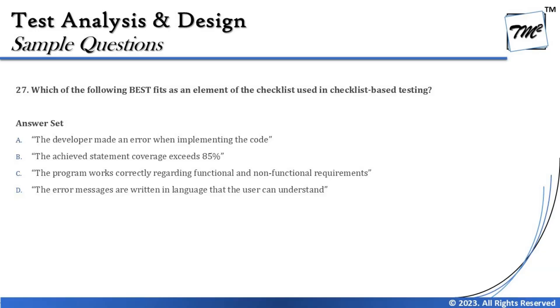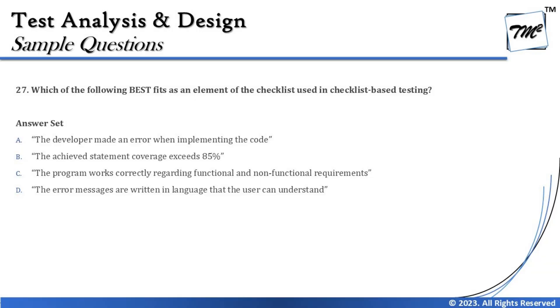Option B says: the achieved statement coverage exceeds 85 percent. This is more like an exit criteria summarizing the amount of testing conducted and coverage achieved, but it's not a technique for evaluating a particular functionality or feature. Option C says: the program works correctly regarding functional and non-functional requirements. This is a summarization — functional and non-functional are broad; you can deep dive further with unit testing, integration testing, system testing, etc. So neither is a candidate to be included as a checklist item.